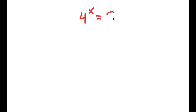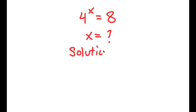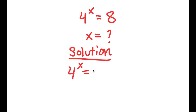In this problem, I have 4 to the power of x is equal to 8. I want to find the value of x. For my solution, I'll first start by rewriting the problem: 4 to the power of x is equal to 8.